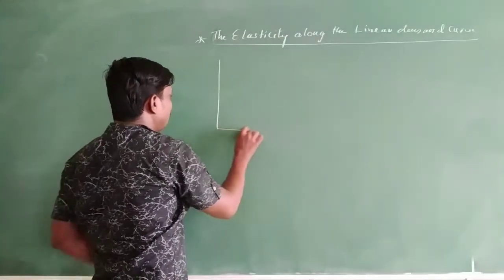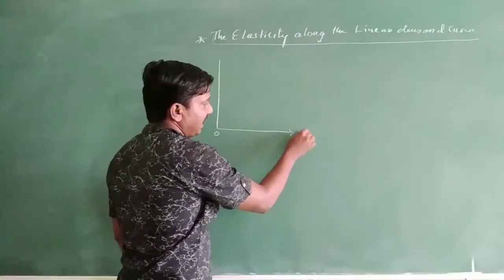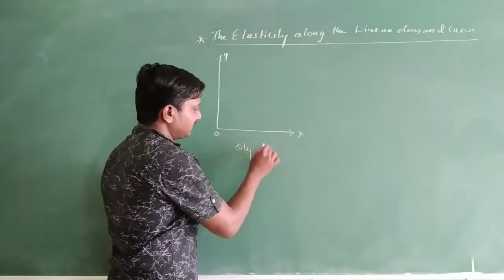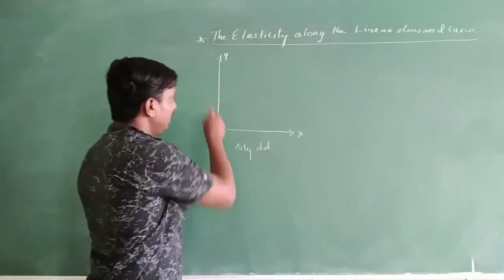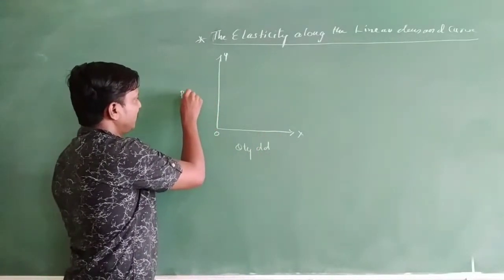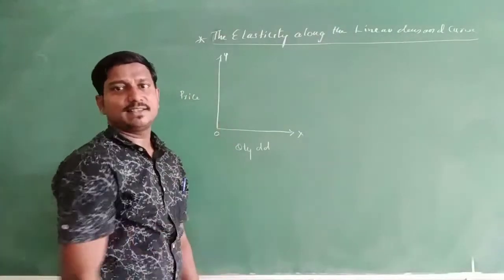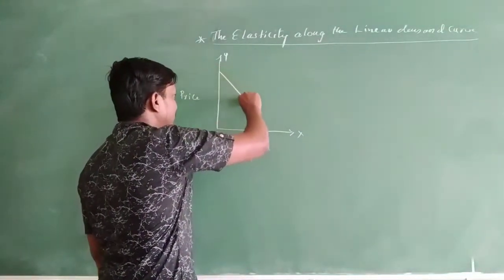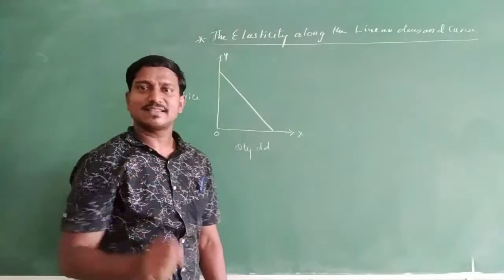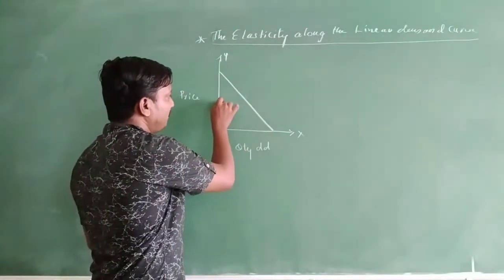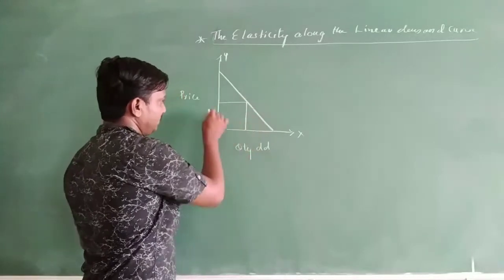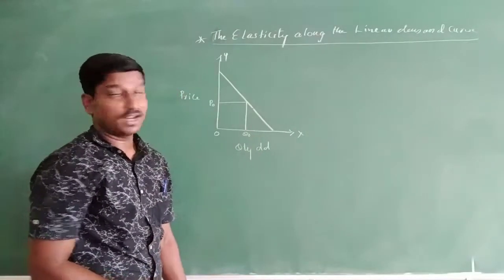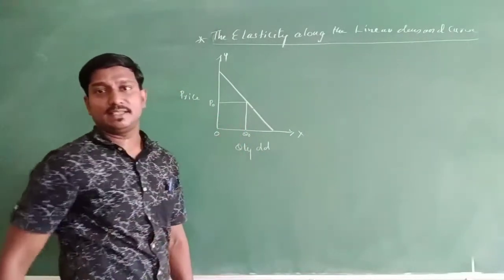On the Y-axis we take price, and on the X-axis we take quantity demand. To understand this, we derive the linear demand curve which connects the X-axis and Y-axis. We will take one basic price and a basic quantity. I am going to name them as P-naught and Q-naught. This is the basic price and this is the basic quantity.